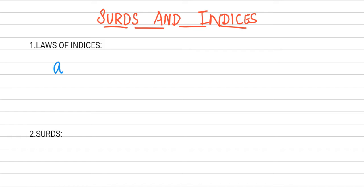Whenever you have something like a to the power m multiplied by a to the power n, we are trying to multiply two numbers whose base is the same. The base 'a' is the same but the power is different. In this case, we take the same base but add the powers of the two numbers, giving us a to the power m plus n.